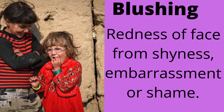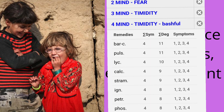There is also a rubric blushing, in which Ambra is an important remedy. The meaning of blushing is redness of face from shyness, embarrassment or shame. So in these 4 rubrics, common remedies are: Baryta carb, Pulsatilla, Lycopodium, Calcarea, Stramonium and Ignatia.